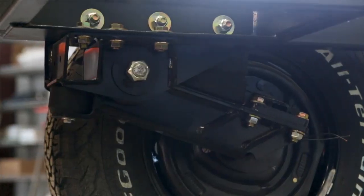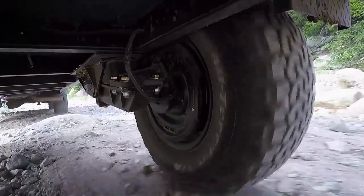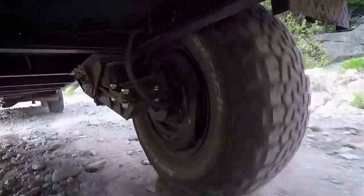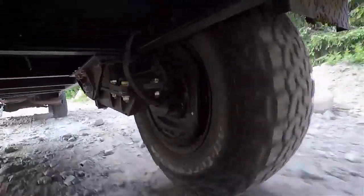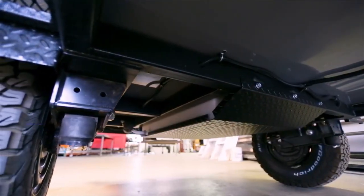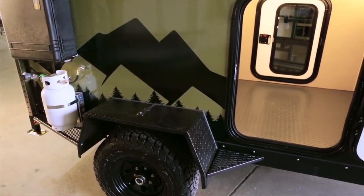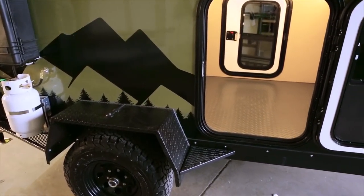Every trailer comes standard with the Timbren independent suspension system. We run the 3500 pound HE kit. The thing loves washboard roads, loves Jeep trails, still has the great highway manners. Everything comes with electric brakes. We have our steel diamond plate fender cover. Definitely can step on it, access the roof no problem.